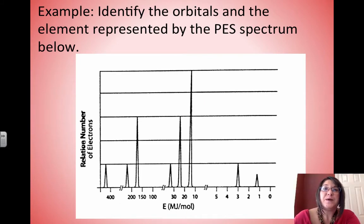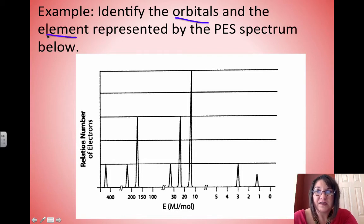Here's an example. We're asked to identify the orbitals and the element represented by the PES spectrum below. First, I'm going to look along my axis for the highest energy on my X-axis.